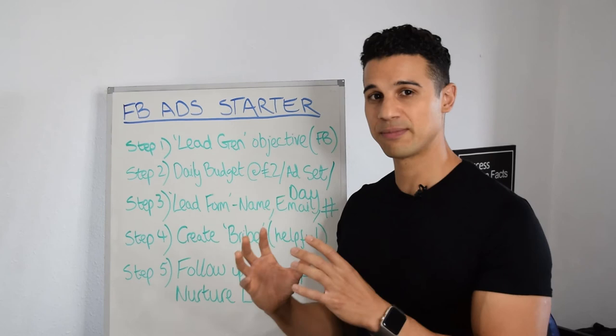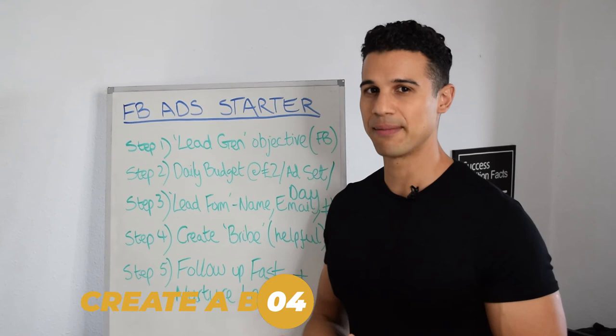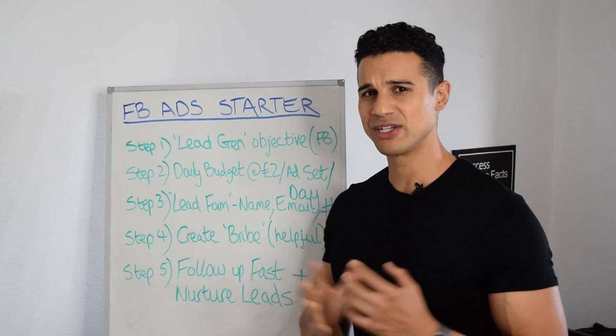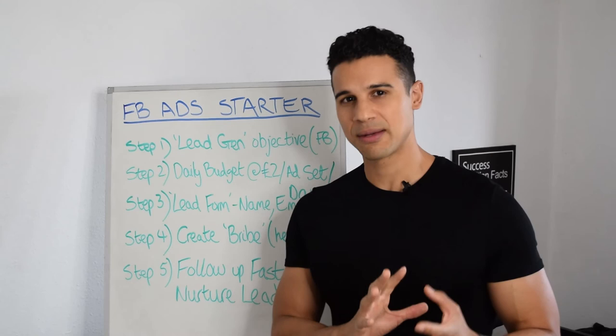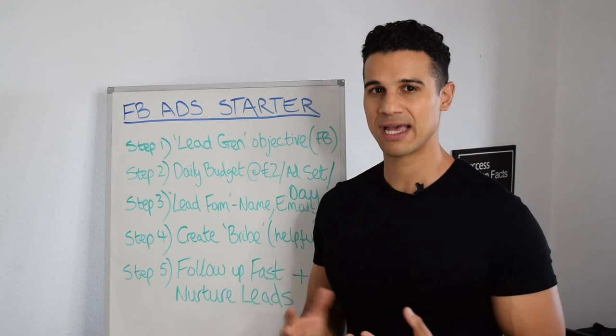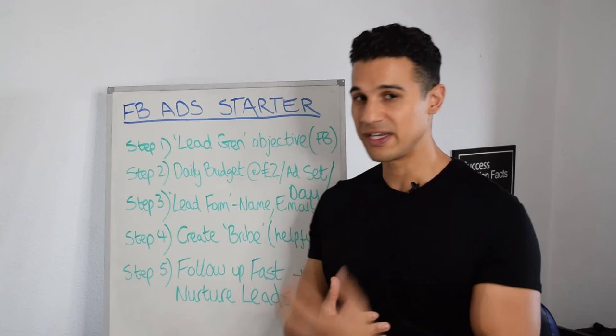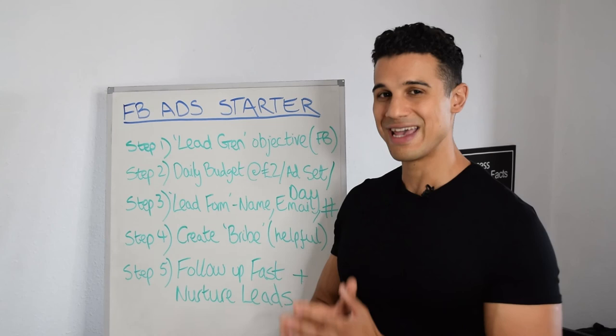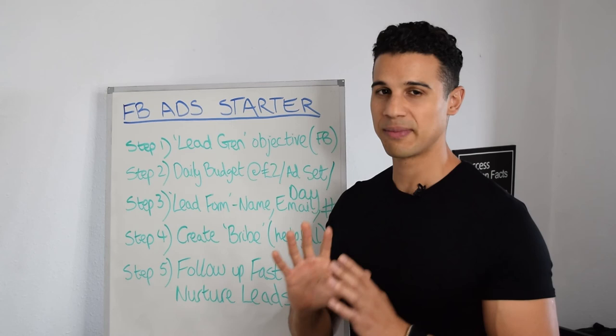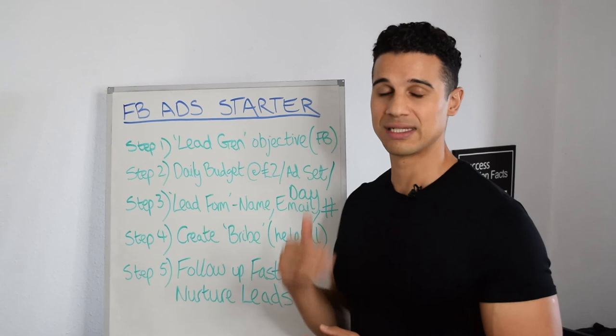Step four is to create a bribe — a piece of content that bribes people to give you their information, because people are very jaded and skeptical nowadays and won't give you their information for no reason. You want to use a piece of content that is actually helpful, that gives them some relief of the problem. It's not going to solve all their problems, but it gives them insight and helps them make a quick start toward their fitness goal. This can be a cheat sheet, a one-page checklist, a short e-book, or even a video — anything helpful and valuable enough that people are willing to give you their information so you can follow up.